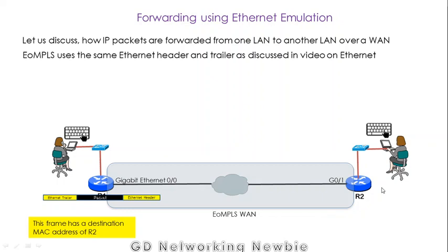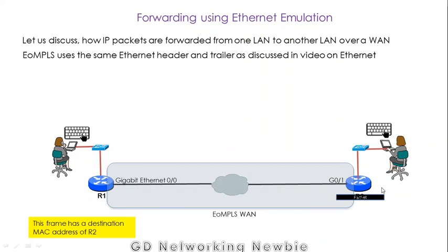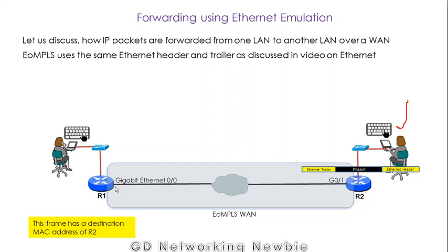By following this MAC address, the frame is forwarded to R2. After receiving the frame, R2 decapsulates it — again removing the header and trailer. Now the packet needs to be forwarded to the destination computer on that network, so R2 re-encapsulates the packet with an Ethernet header and trailer containing the MAC address of the destination computer.